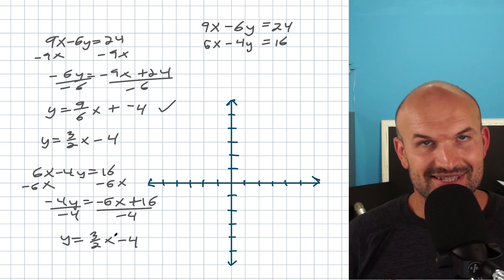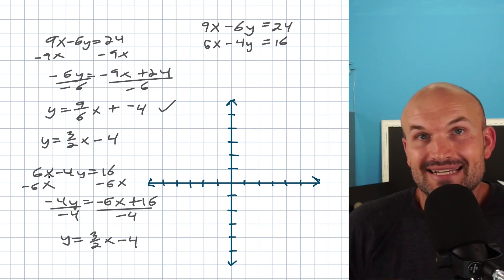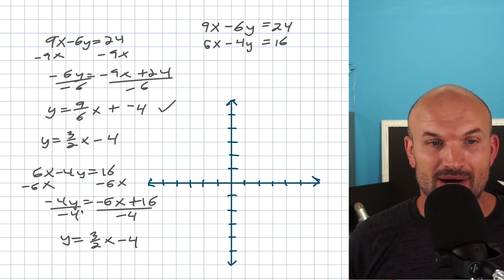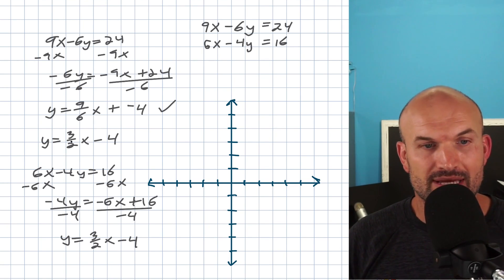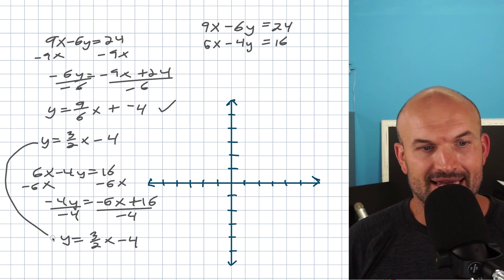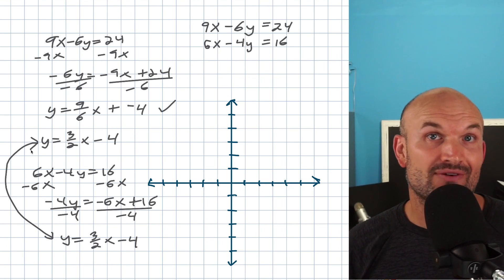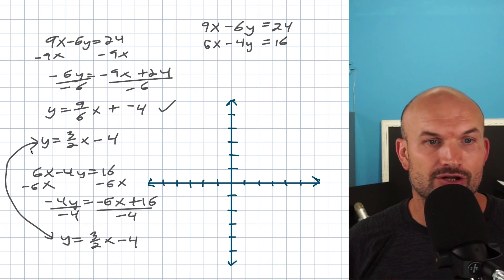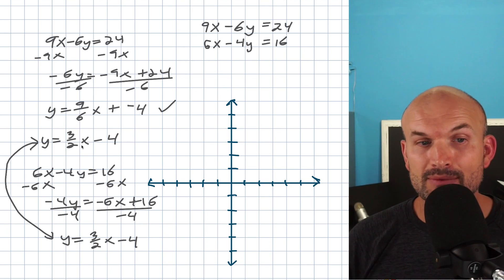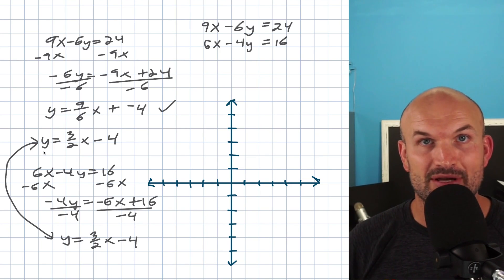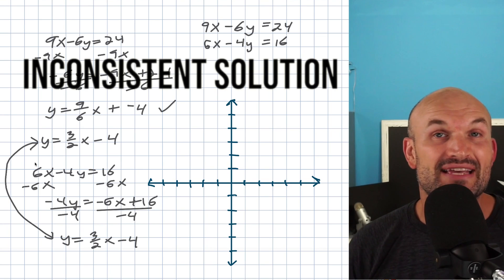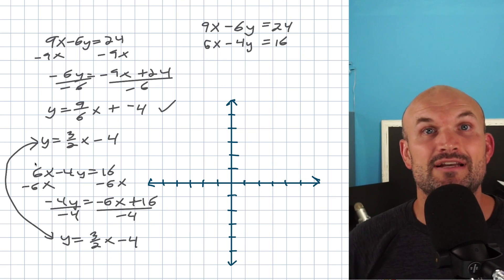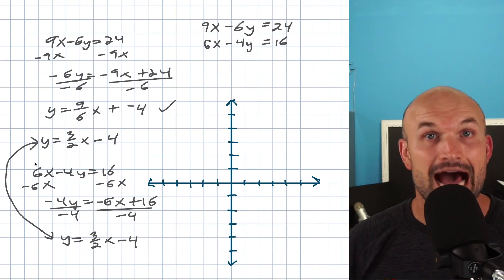Now let's do the second equation. I did do some of the math in my head — sometimes we are taking a test and heading against time, but I don't want you making mistakes. What's really important to understand here is we actually have the exact same equation. If you didn't simplify, you might not have recognized that. That's why it's so important to simplify your two equations.